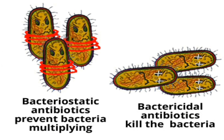With bacteriostatic agents, the reproduction as well as the replication of bacteria is prevented. Coming to bactericidal agents — 'cidal' means they will kill the bacteria. So bactericidal agents are chemical agents capable of killing bacteria, but not necessarily the bacterial spores.